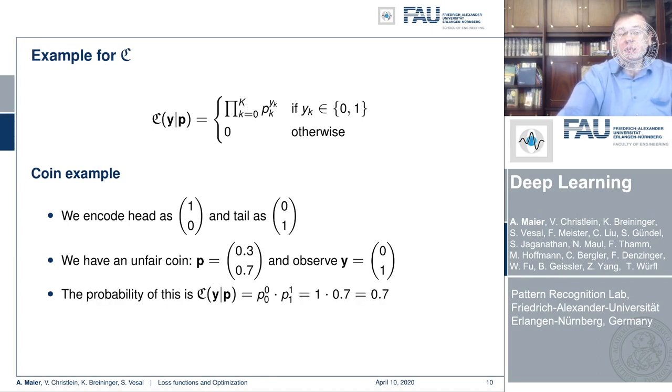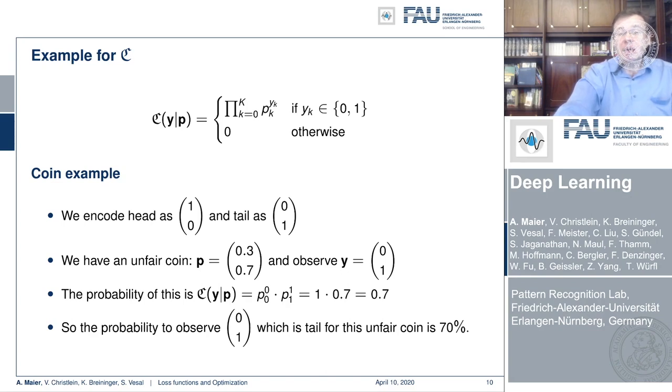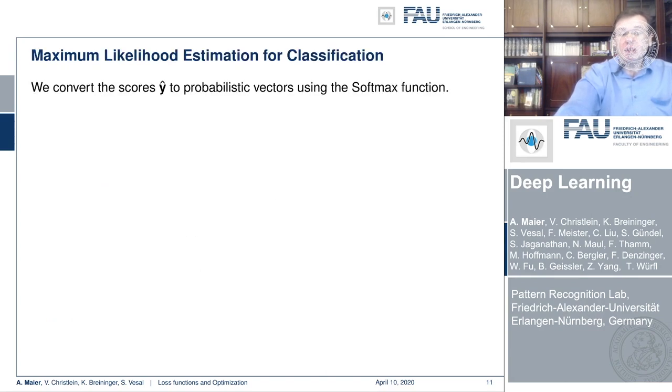We can use the above equation and plug in simply those observations, which means we get 0.3 to the power of 0 and 0.7 to the power of 1. Something to the power of 0 always equals 1, then 0.7 to the power of 1 is of course 0.7, which gives us 0.7. This means that the probability to observe (0,1), which is tail for our unfair coin, is 70%. We can always use the softmax function within the network to convert everything into probabilities.